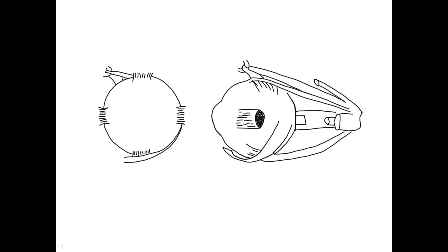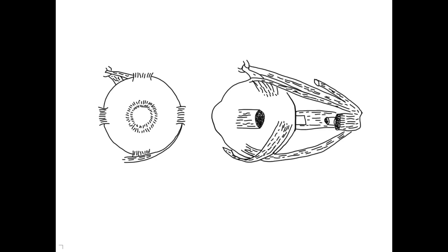Eye movements are often considered tricky because there are three axes of movement. There's the vertical axis which offers abduction and adduction, a horizontal axis which offers elevation and depression, and an anterior-posterior axis which offers internal and external rotation, sometimes referred to as medial or lateral rotation.